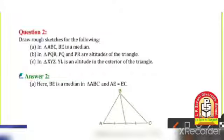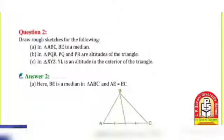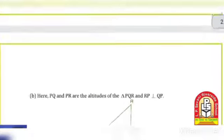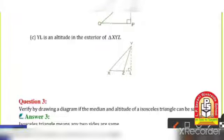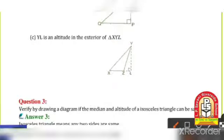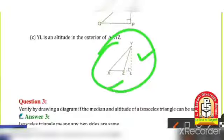Then after next, (c): In triangle XYZ, YL is the altitude on the exterior of the triangle. Here YL is an altitude in the exterior of triangle XYZ. This kind of triangle has altitude YL like this at the exterior side of XYZ.